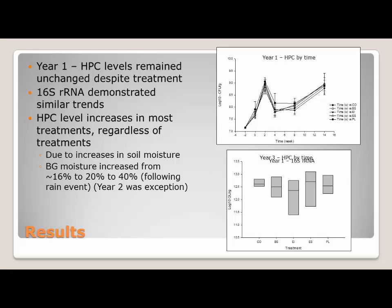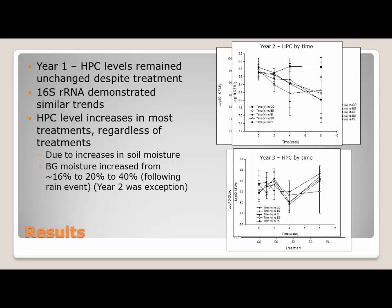We did look at 16S ribosomal RNA, comparable to a particular time point, and once again we don't really see a treatment effect. Looking at year two, the data is a little bit more variable. There is a drop that looks more dramatic than it actually is — it's less than a log drop. One outlier is that the poultry litter treatment plots did sustain a little bit more readily than the other plots. Year three kind of went back to what we saw in year one with the cyclical increase and decrease.